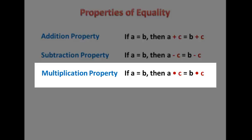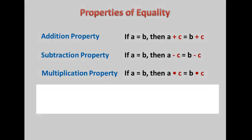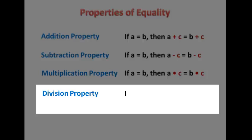then if we multiply the first side by C, we have to multiply the second side by C as well. And then the division property says that if A equals B and C does not equal zero, then if we divide A by C, then we can divide B by C as well.